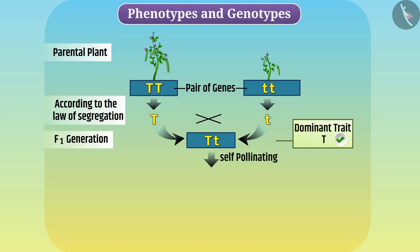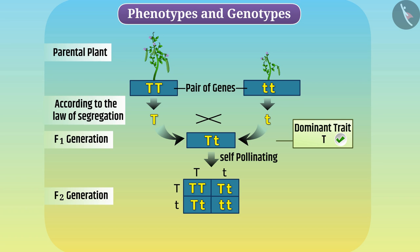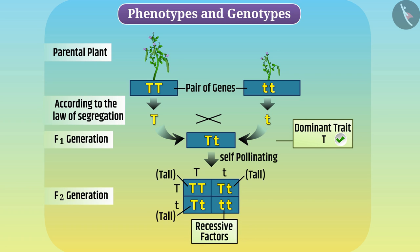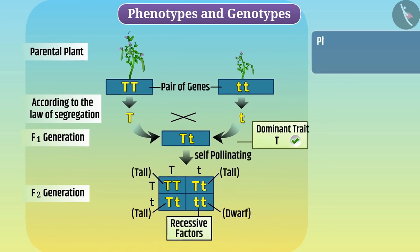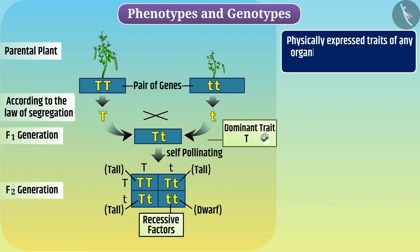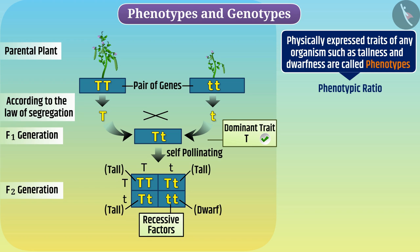After self-pollinating the F1 generation plants, F2 generation plants will have various combinations. Since tallness is a dominant character, these plants will grow tall. And in plants that have both recessive factors, they will be dwarf. Physically expressed traits of any organism, such as tallness and dwarfness, are called phenotypes, and the ratio of these traits is called phenotypic ratio. Here, the phenotypic ratio is 3 is to 1.